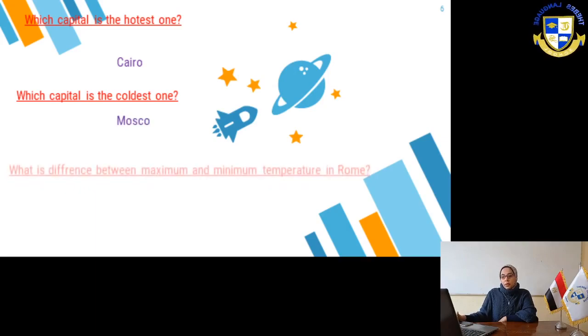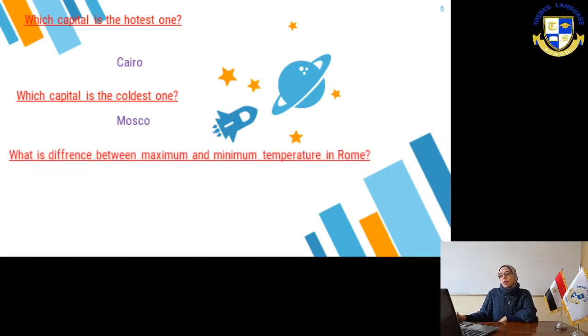What is the difference between maximum and minimum temperature in Rome? Difference means minus. So, the difference between the minimum and the maximum of Rome is 18 minus 10. It will be 8.